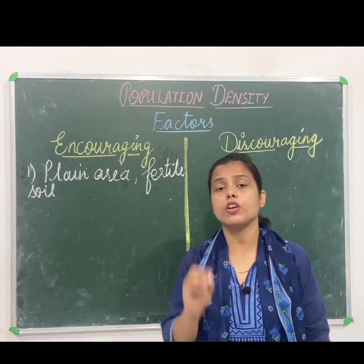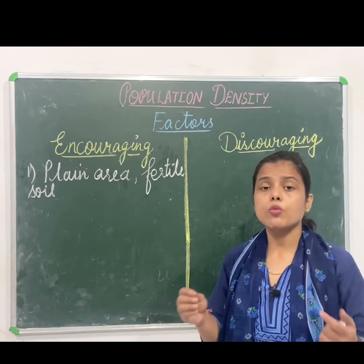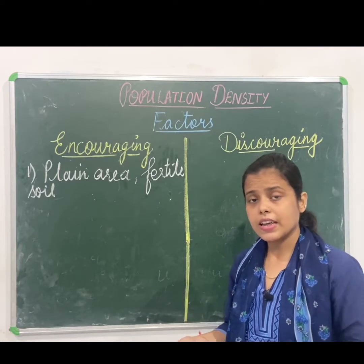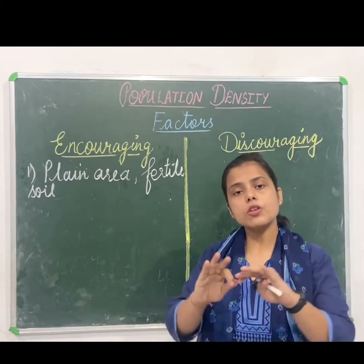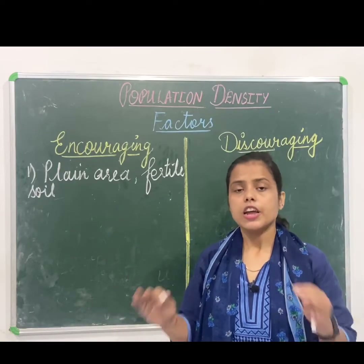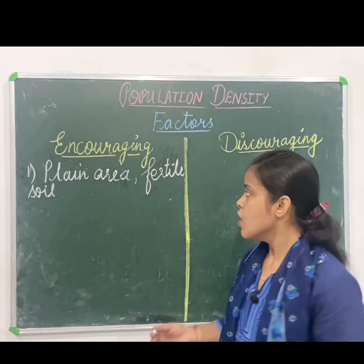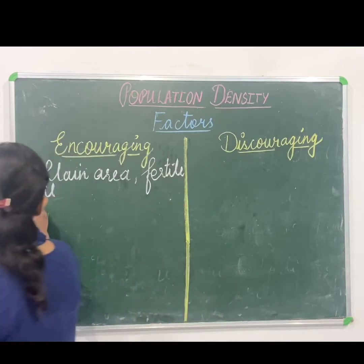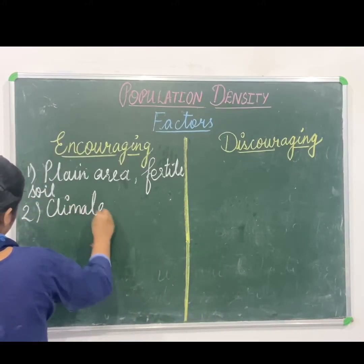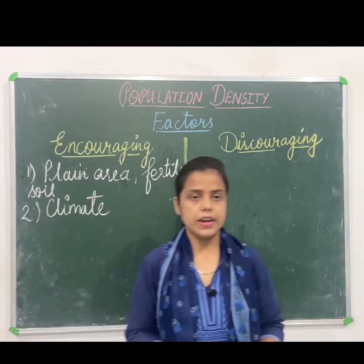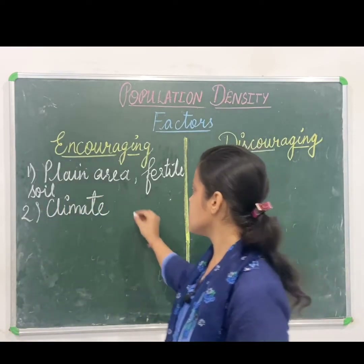The next factor is the climate of that place. The climate should be suitable for human beings to survive and feel comfortable. It should not be very cold or very hot — it should have a moderate climate and experience all types of seasons. So the second encouraging factor is climate.